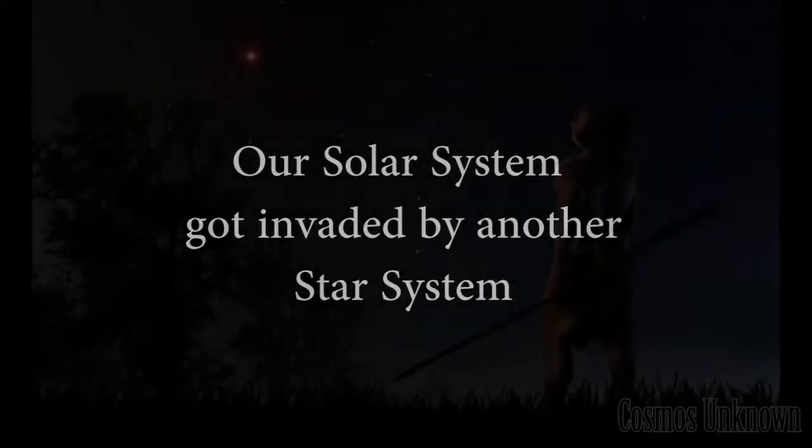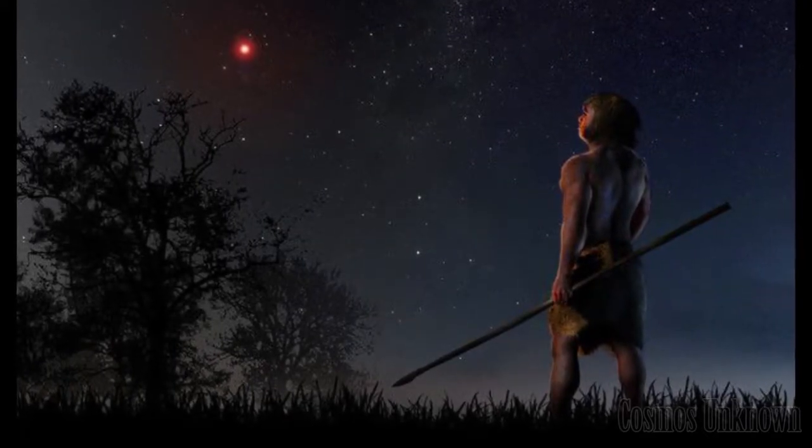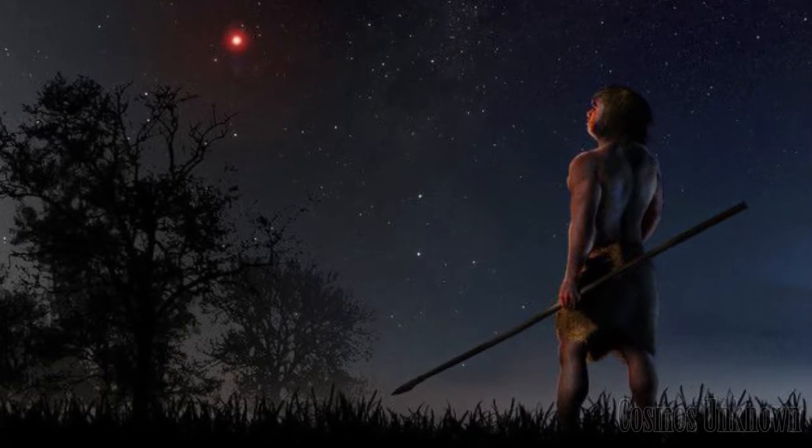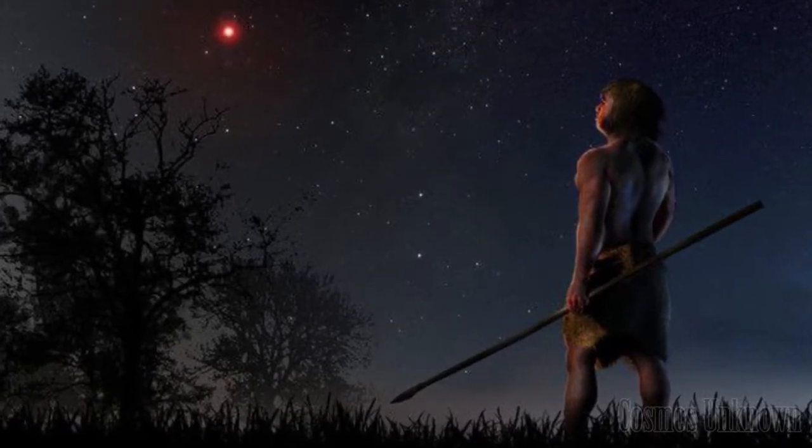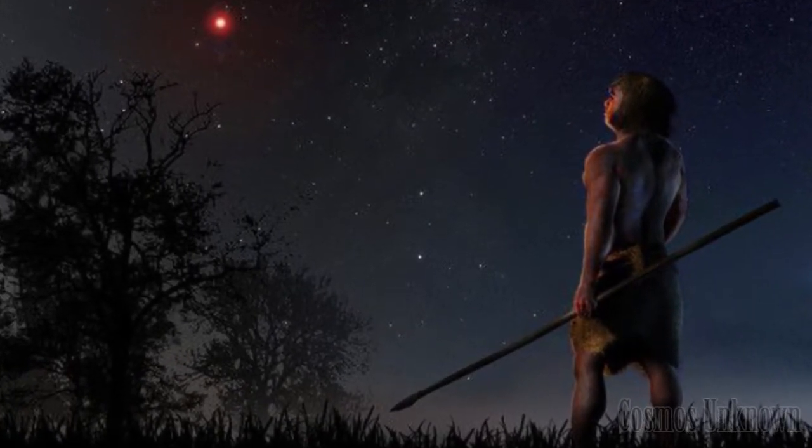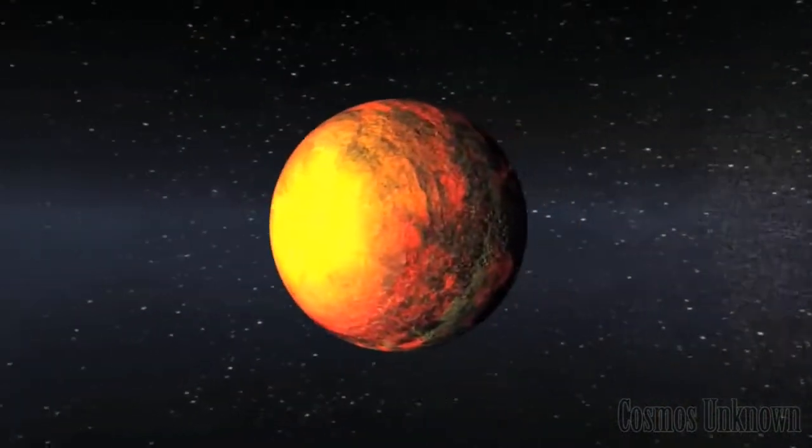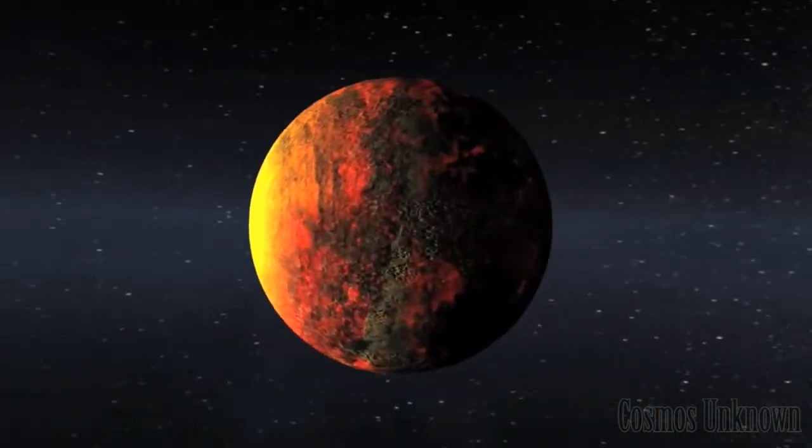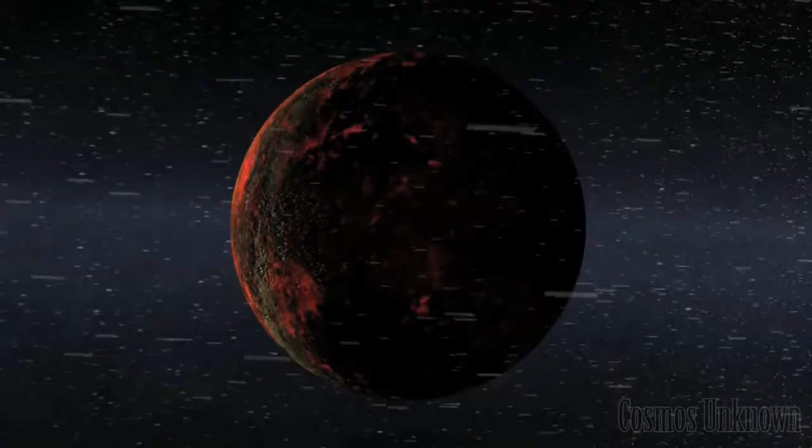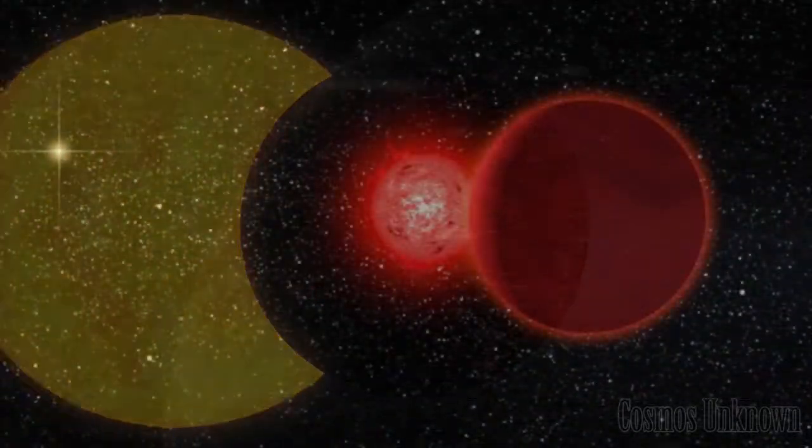About 70,000 years ago, any hominins who happened to gaze up at the night sky may have caught an incredible sight. At that time, astronomers hypothesize, a small red dwarf star was skirting the edges of our solar system, cruising along within one light year of the Sun.